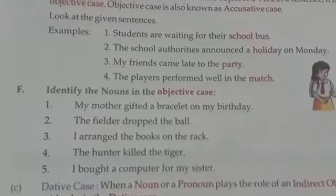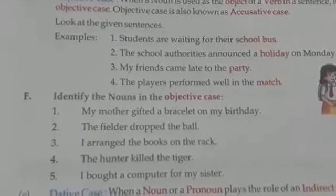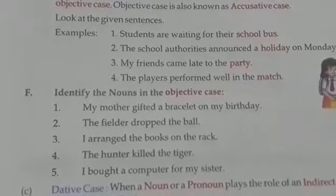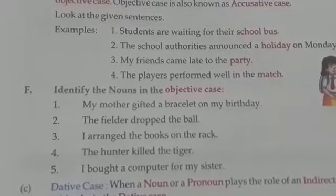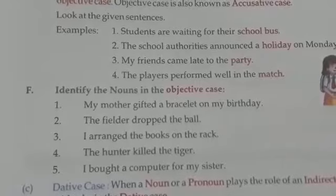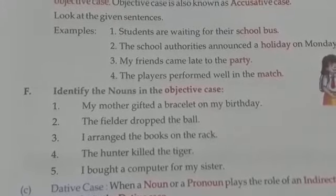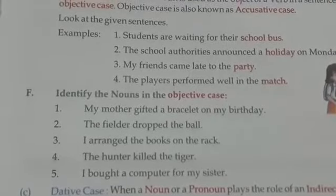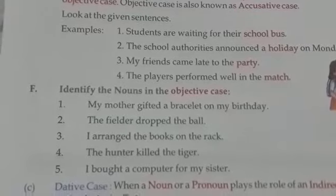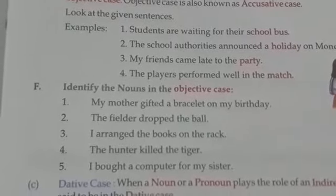Here is one more exercise where you have to identify the nouns in the objective case: 'My mother gifted a bracelet on my birthday.' 'The fielder dropped the ball.' 'I arranged the books on the rack.' 'The hunter killed the tiger.' 'I bought a computer for my sister.' Write only the answers in your notebooks after putting the exercise number of this chapter.